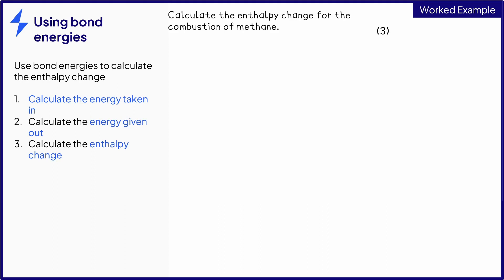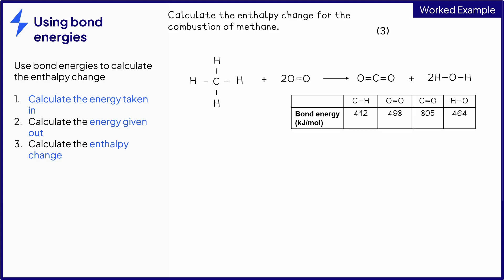You must be able to use bond energies to calculate the enthalpy change for a reaction. This example asks you to calculate the enthalpy change for the combustion of methane. You will always be given a table with the bond energies in, and the displayed formula for the reactants and products. First, you need to determine the total energy taken in to break the bonds, and then calculate the total energy released when new bonds are made. It is helpful to separate out your reactants and products to do this.